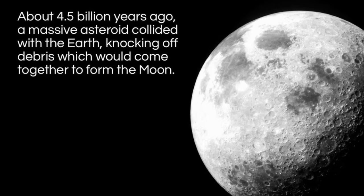So where did it come from? The current theory says that shortly after the Earth formed, about four and a half billion years ago, a massive asteroid about the size of present-day Mars collided with the Earth, knocked off huge amounts of debris. This debris floated around the Earth, held by gravity, and would accrete or stick together into larger and larger clumps, which would become the modern-day moon.